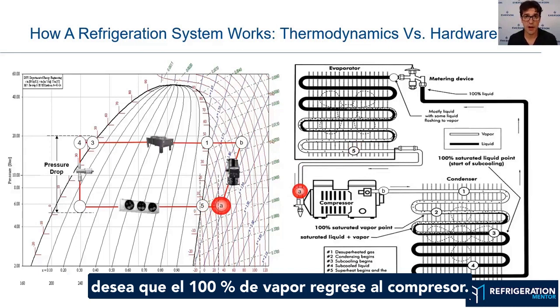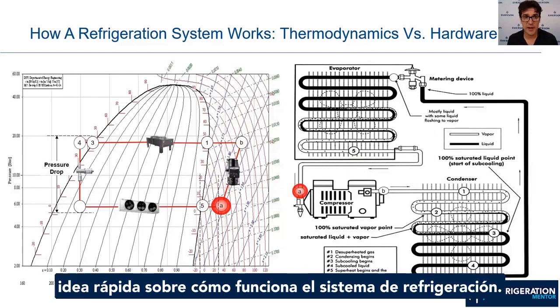And now here's your superheat from 5 to A, because you want 100% vapor going back into the compressor. Hope this gives you kind of a quick idea on how a refrigeration system works.